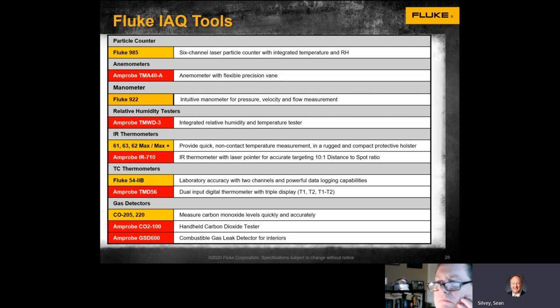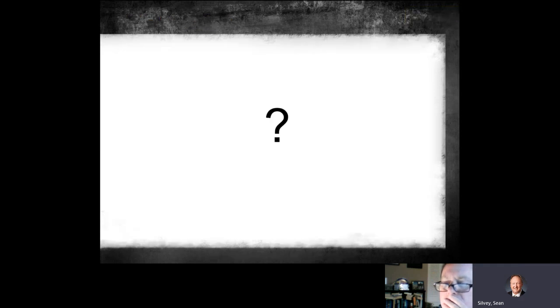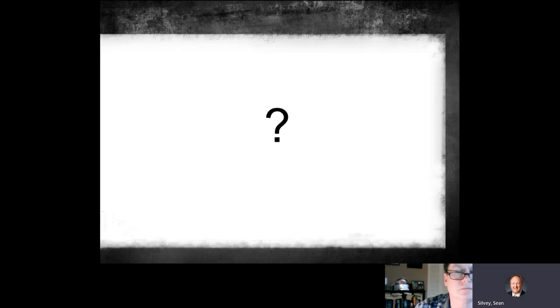The 985 and the 922 are crucial right now with COVID-19. These units could be very helpful in managing these environments and getting them set up properly. Thank you to everybody who attended and who will be watching this. Fluke has the ability to truly help in these situations and environments. Stay safe and have a good day.